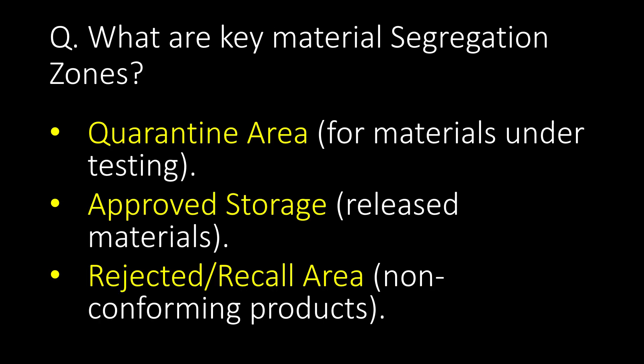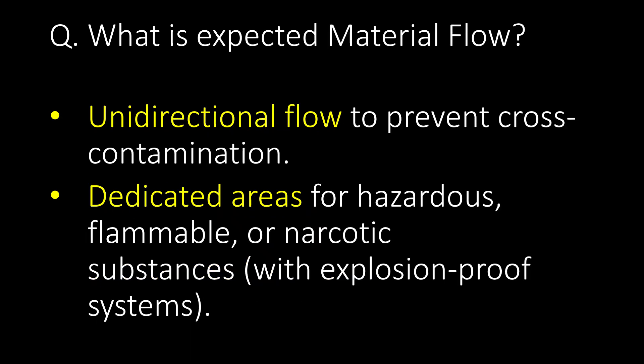What are key material segregation zones? First, quarantine area for materials under testing. Second, approved storage area for released materials. Third, rejected or recall area for non-conforming products. For material flow, unidirectional flow is maintained to prevent cross-contamination, with dedicated areas for hazardous, flammable, or narcotic substances with explosion-proof systems.